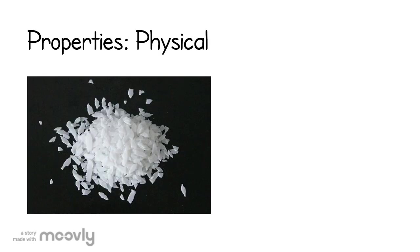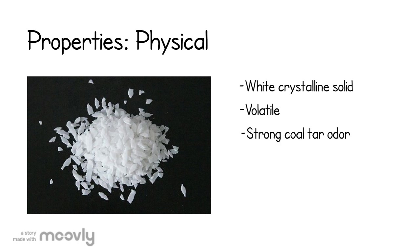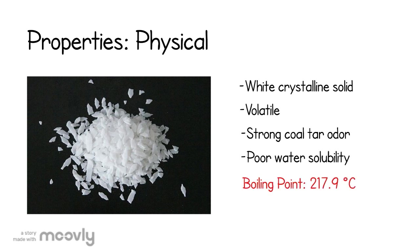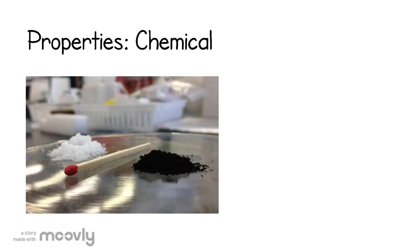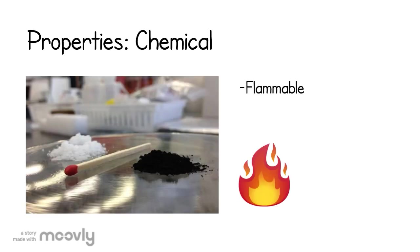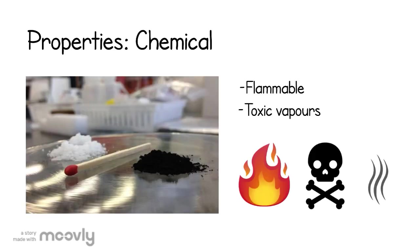Naphthalene is a crystalline solid that is white, is volatile, has a strong coal tar odor, and has poor water solubility. It has a boiling point of 217.9 degrees Celsius and a melting point of 80.2 degrees Celsius. This chemical is also flammable and the vapors given off can be toxic.